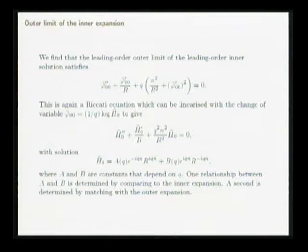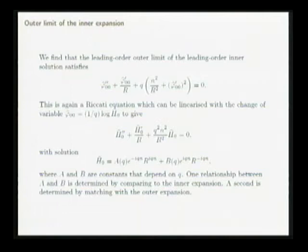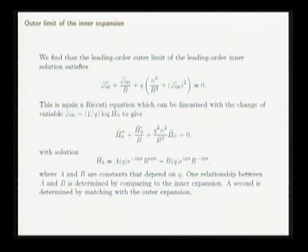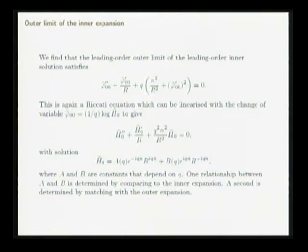When Hagen does this procedure, he thinks of it as a sort of middle region sitting in between the two expansions, but I think it's really just writing down the equation satisfied by the outer limit of the leading-order inner expansion. If you do that, it basically allows you to sum that series. When you do the leading-order outer limit of the leading-order inner expansion, you get a similar equation for the phase — almost exactly the same as in the outer region. Again, it's a Riccati equation, so you can linearize it, and it turns into a linear equation. But now the solution is not Bessel functions — it's powers of r: complex powers, r to the i q n and r to the minus i q n. The two coefficients are determined by comparing with the series expansion for small q.